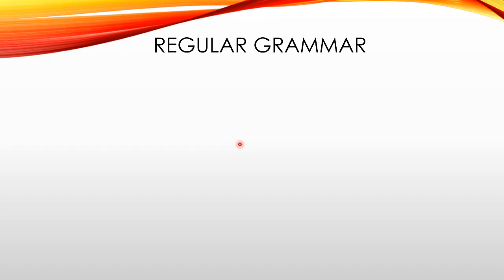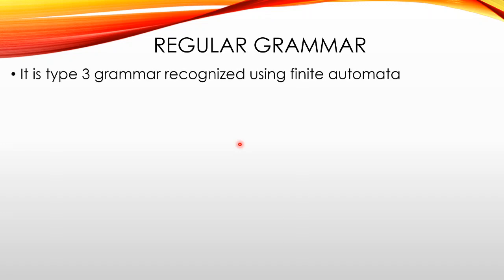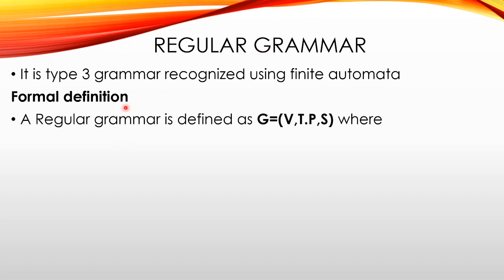We are going to study the production rule. Type 3 Grammar is recognized using Finite Automata. Now the Formal Definition: we will study DFA and NFA with the Formal Definition. Regular Grammar is defined as G equals (V, T, P, S) — it is a four-tuple.